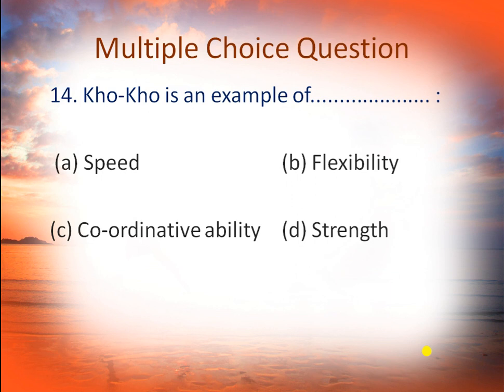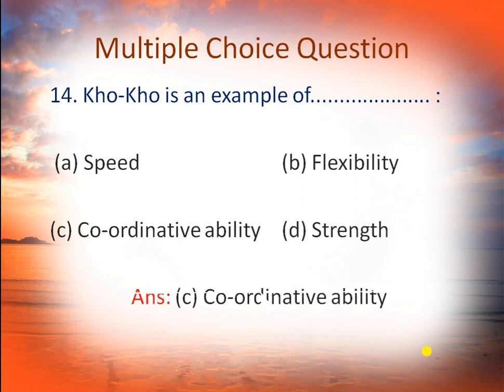Next question: Kho-Kho is an example of — A: speed, B: flexibility, C: coordinative abilities, and D: strength. In Kho-Kho we require speed, flexibility, endurance, and strength. The combination of all these is called agility, or coordinative abilities. So C is the right answer — coordinative abilities.